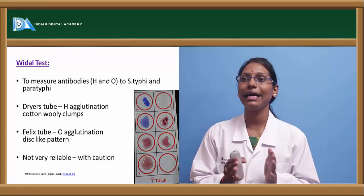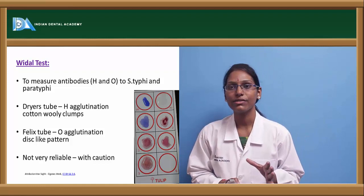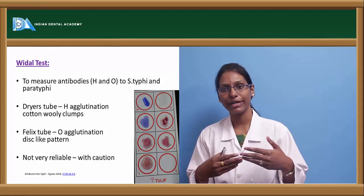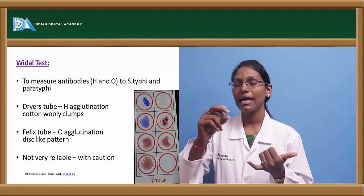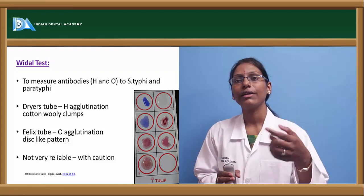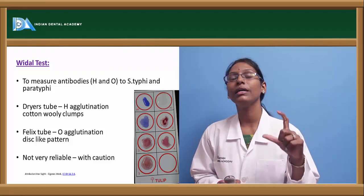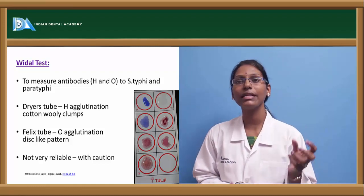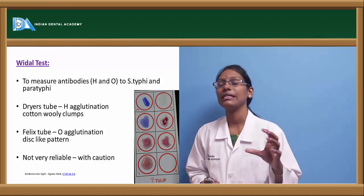The Dreyer's tube helps in identifying the H antibody, whereas the Felix tube helps in identifying the O antibody. In the Dreyer's tube, pre-manufactured antigen H and antigen O sera are used. Four tubes are used — two for H and two for O — where H antigen is added into one of the tubes. If H antibody is present, there will be agglutination forming cotton-woolly clumps. If O antibody is present, it reacts with the O antigen producing a disc-like pattern.